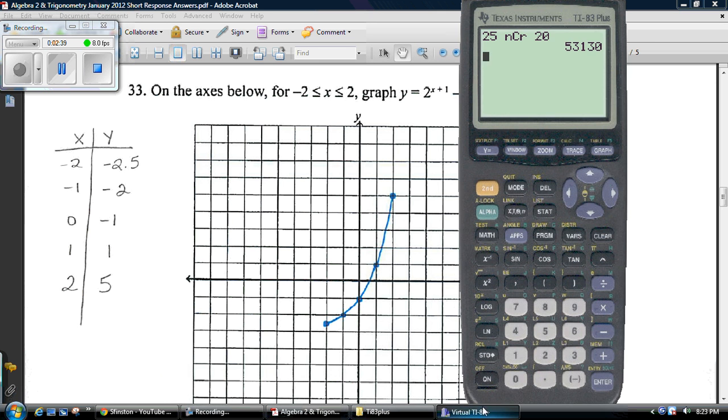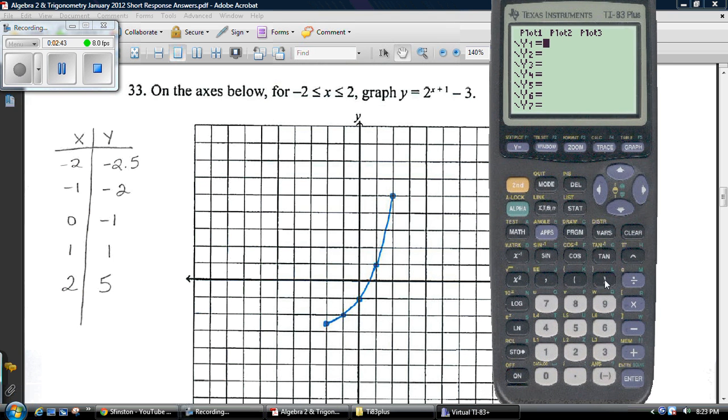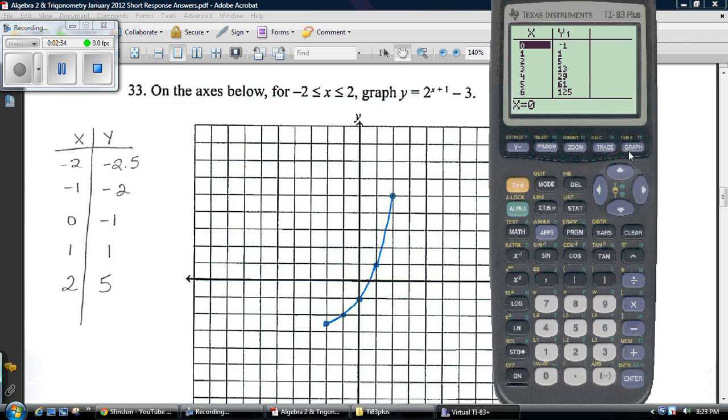For the following one, you use your calculator once again. We're going to clear it out, go into the y equals screen. We're going to type in our equation, 2 raised to the parentheses x plus 1 power, close it, minus 3. And then I'm going to go look in the table of values, and it wants me to just graph the ones from negative 2 to 2. So I wrote these coordinates down, I plotted them down, piece of cake.